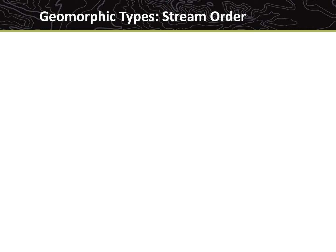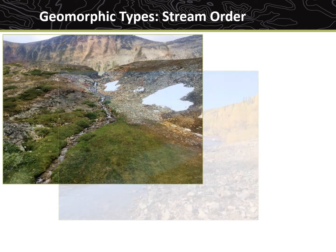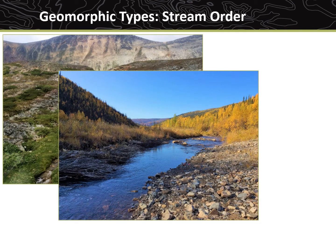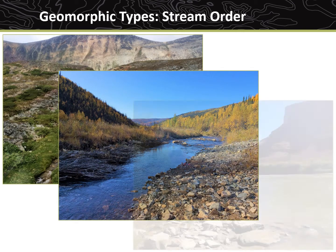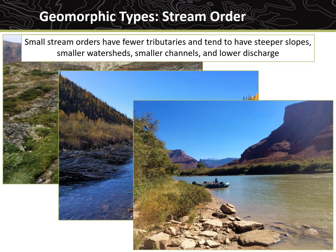Lotic AIM sample designs commonly use Strahler stream order to organize Lotic systems into three size class categories: small streams, which are first and second order; large streams, which are third and fourth order; and rivers, which are fifth order and above. Smaller stream orders have fewer tributaries and tend to have steeper slopes, smaller watersheds, smaller channels, and lower discharge than larger stream orders.